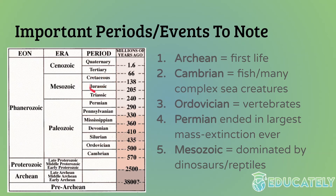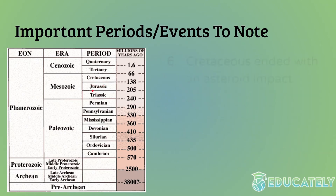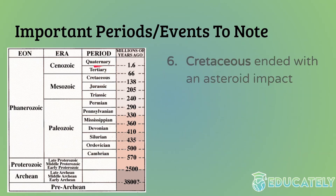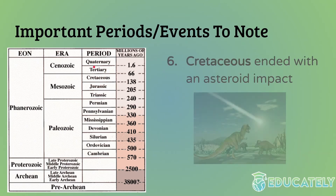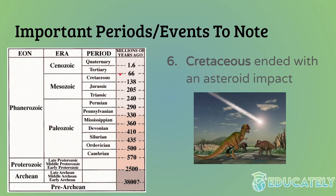You might have heard of Jurassic Park or Jurassic World — that's based on the Jurassic period, which is an interesting fact. Sadly, these dinosaurs didn't live into the Cenozoic. They died, presumably by an asteroid impact at the end of the Cretaceous. That's what separates the Mesozoic and the Cenozoic — the Cretaceous and the Tertiary periods.